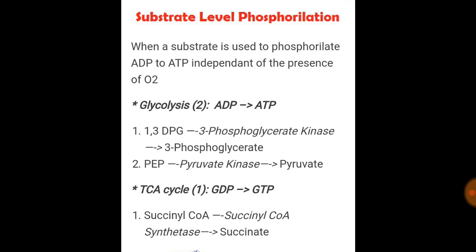In the TCA cycle, GDP is converted to GTP — not ADP to ATP, but GDP to GTP. The step is succinyl-CoA converted to succinate by succinyl-CoA synthetase. So the step in the TCA cycle that catalyzes substrate level phosphorylation is succinyl-CoA synthetase, converting succinyl-CoA to succinate.